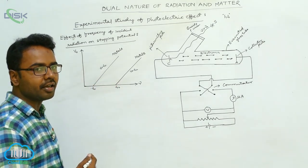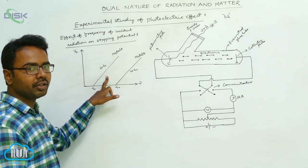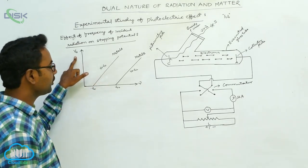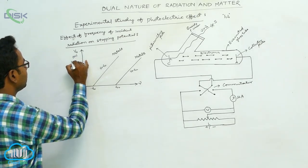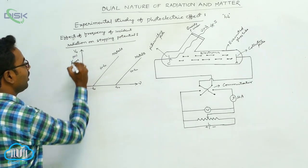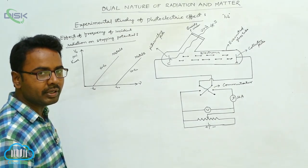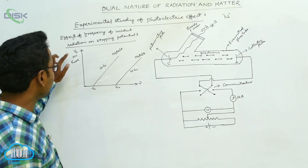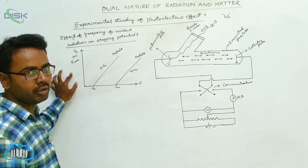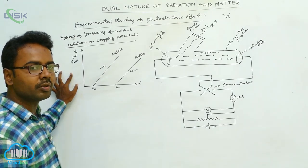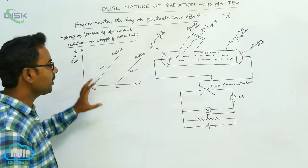The graph is a straight line, showing that the stopping potential increases linearly. This is equivalently applicable for the maximum kinetic energy of the electrons — on the y-axis, instead of stopping potential, we can take the maximum kinetic energy of the emitted photoelectrons.